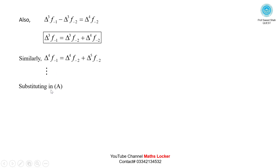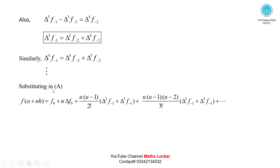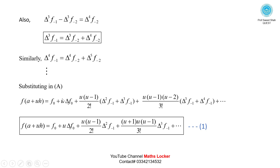Substituting these values into equation (a), we obtain: f(a+uh) = f(0) + u·delta f(0) + u(u-1)/2! · [delta² f(-1) + delta³ f(-1)] + u(u-1)(u-2)/3! · [delta³ f(-1) + delta⁴ f(-1)] + ... After simplification, this becomes equation (1): f(a+uh) = f(0) + u·delta f(0) + u(u-1)/2! · delta² f(-1) + u(u-1)(u+1)/3! · delta³ f(-1) + ...